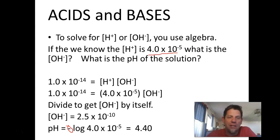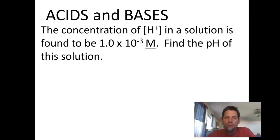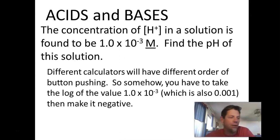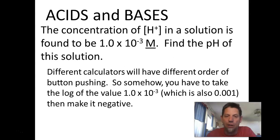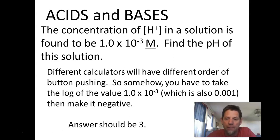Let's go through one more example. If the concentration of the hydrogen ion is 1 × 10⁻³, find the pH. You take the negative log of 1.0 × 10⁻³. Different calculators have different button sequences, so you need to figure out how yours works to take the log of a value. You could also convert the scientific notation number to standard notation — 0.001 — and punch that in, then take the log. Either way, the negative log of 1 × 10⁻³ equals 3. The answer is pH = 3.